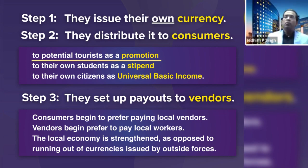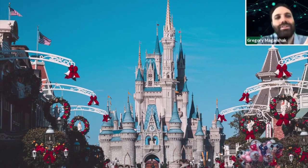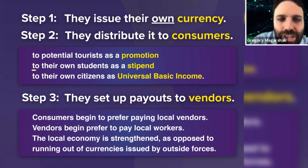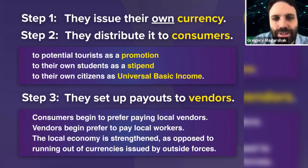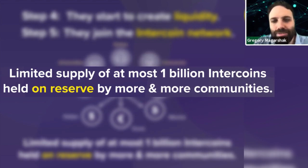When you distribute this currency to tourists, you can actually attract them to come to your city. Disney World can give Disney dollars to everybody in the country — that's called a promotion. When a university gives it to their own students, it's called a stipend. And when a city gives it to its own citizens, it's called a universal basic income. That's what we want to see — we want to solve real social problems, and we want the communities to vote on how much to give out.